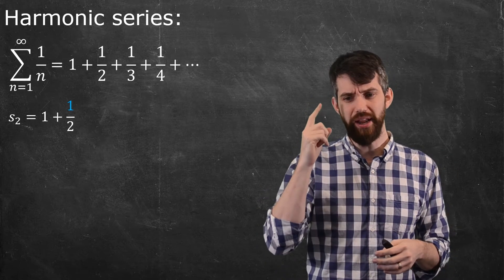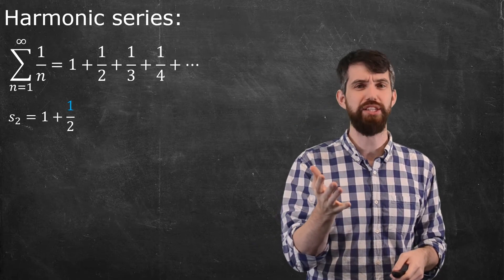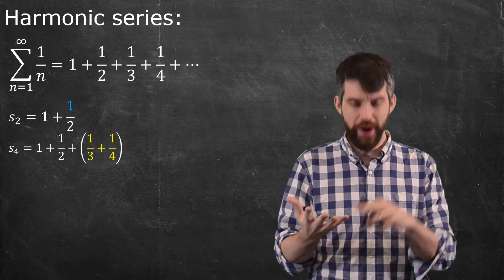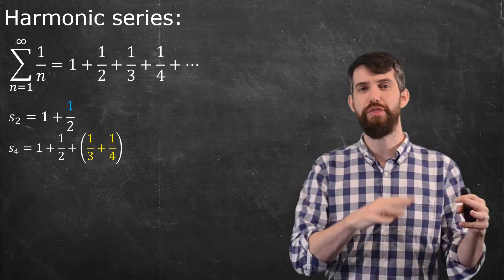Now, I'm going to be a little bit tricky. I'm not going to investigate s3. I'm going to skip right to s4, which is 2 squared. And if I investigate s4, it's 1 and a half and a third and a quarter, but notice how I've highlighted the one-third and the one-quarter.